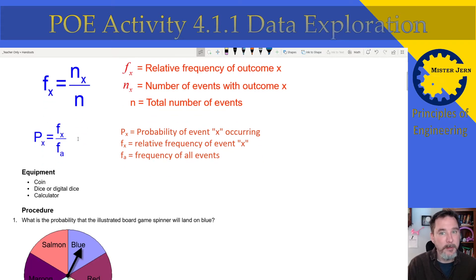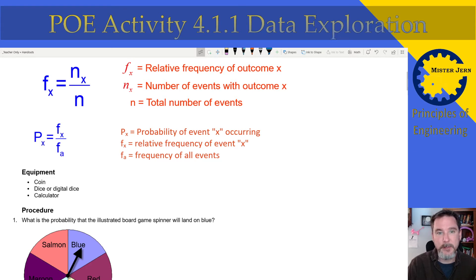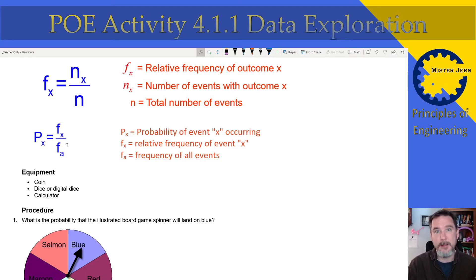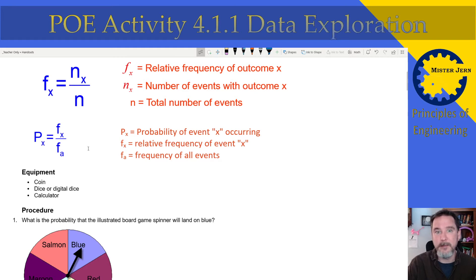Then we have the probability of x — or in our case, the probability of heads. What is the probability of heads? You take the frequency of heads, which you just calculated, and divide it by the frequency of all events. In this case there are 10 events, and so you'll get the probability of heads.